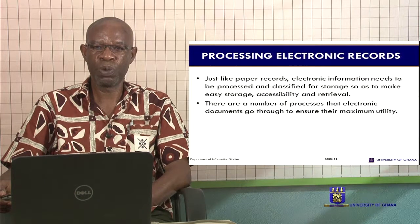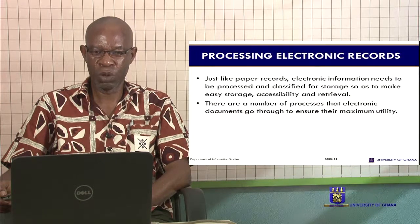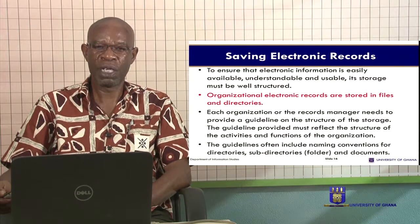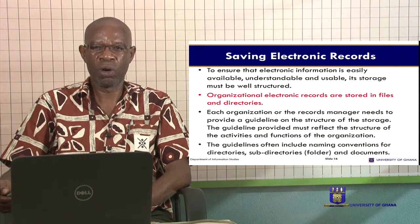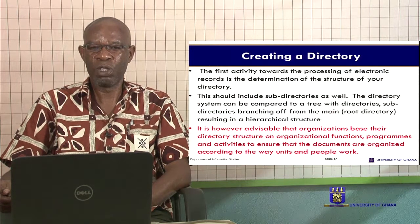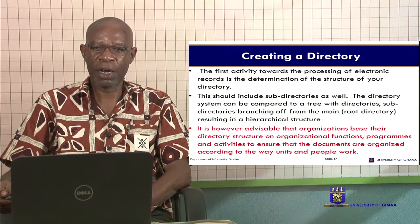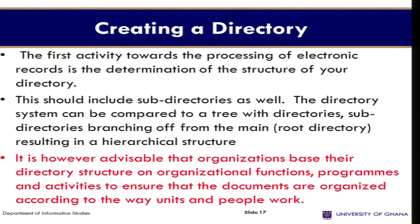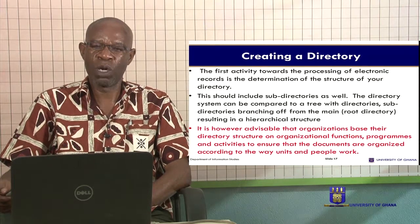Just like paper records, electronic records need to be processed and classified for storage so as to make storage, accessibility and retrieval easy. Electronic records are stored in files and directories. You create directories and subdirectories within which you store your records so that anytime you want to retrieve any document, you'll be able to find it. The first activity towards processing of electronic records is the determination of the structure of your directory, which will include subdirectories as well. The directory system can be compared to a tree structure, with subdirectories branching off from the main.